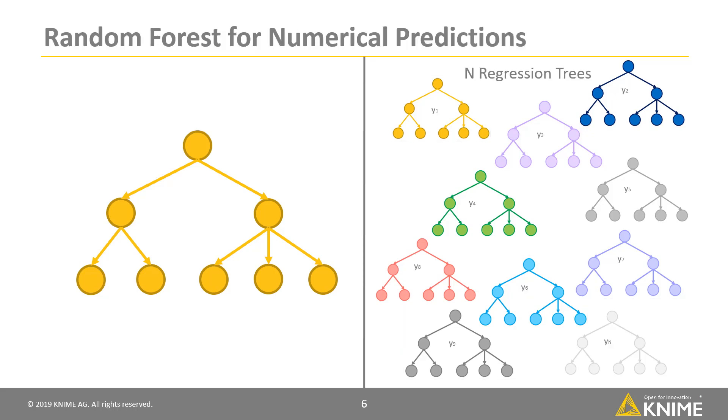Random forests can also work for numerical predictions and not only for classification. In this case, the random forest consists of regression trees rather than decision trees, and the final score is calculated by averaging the scores of the single trees.